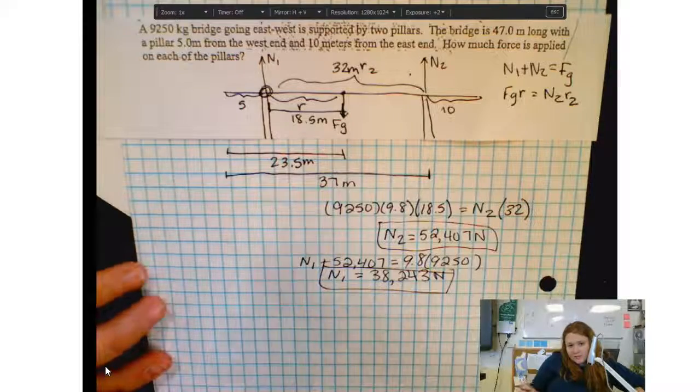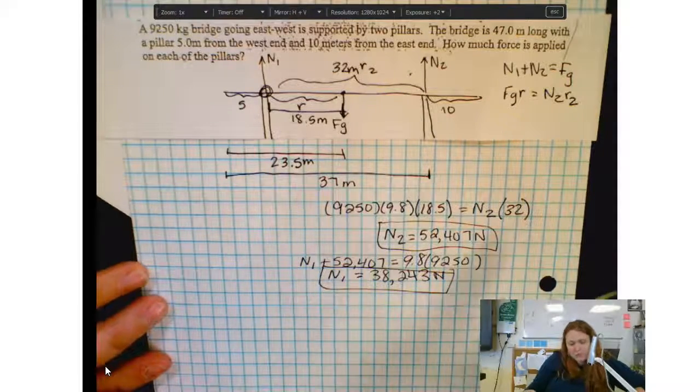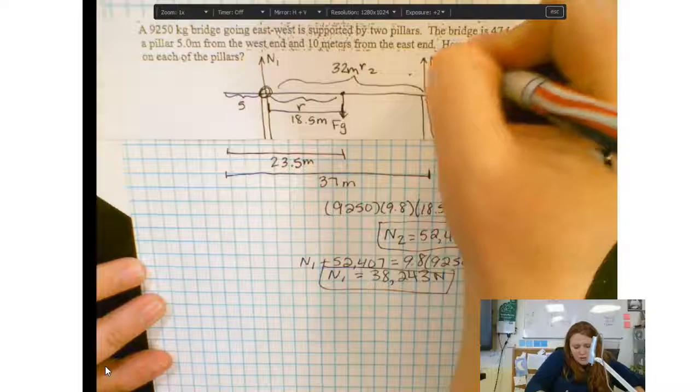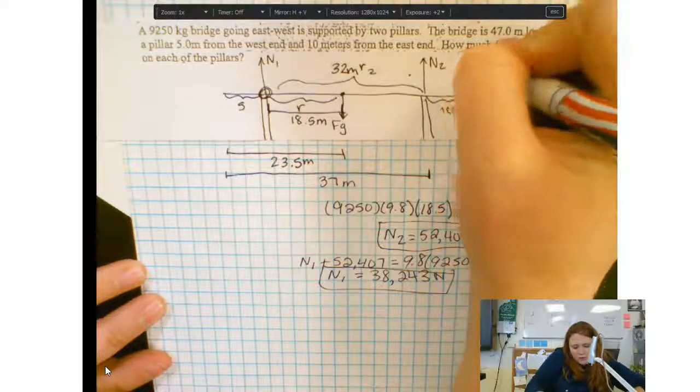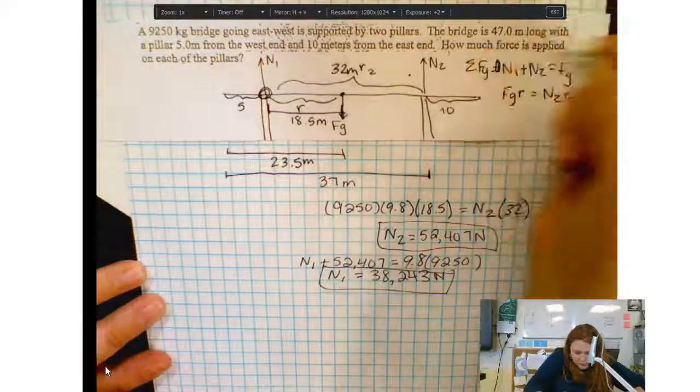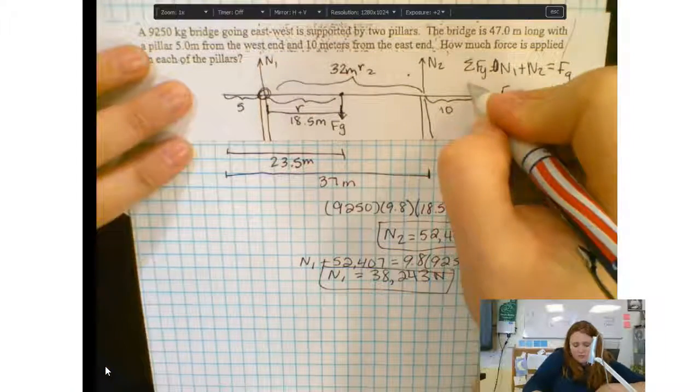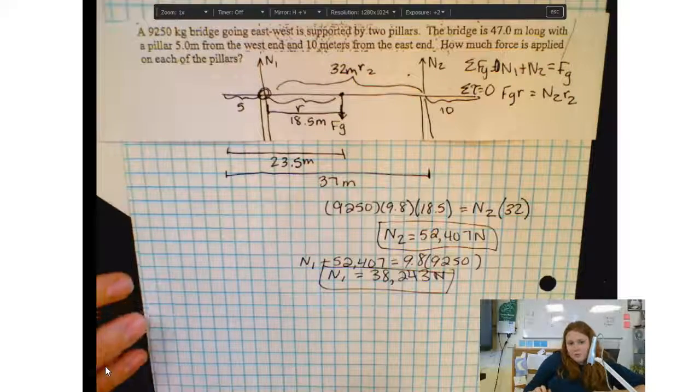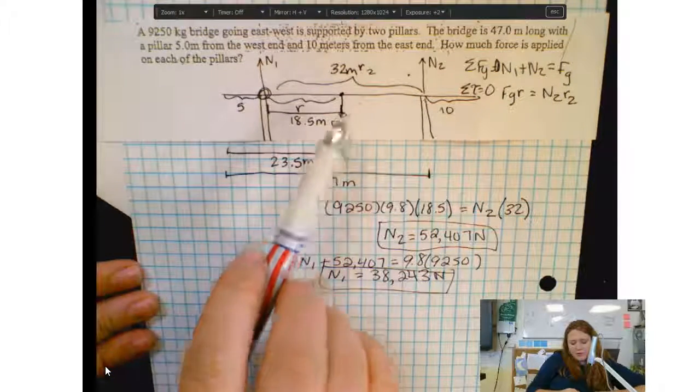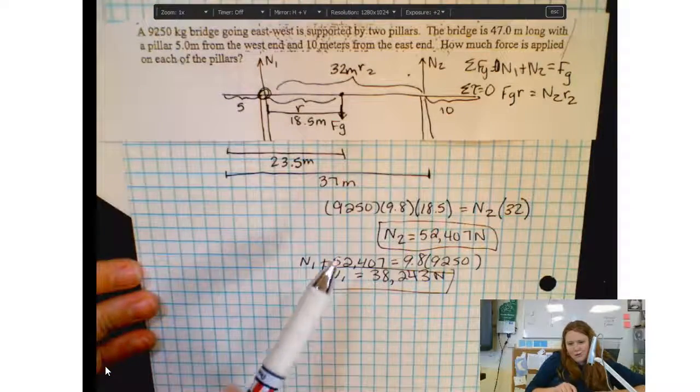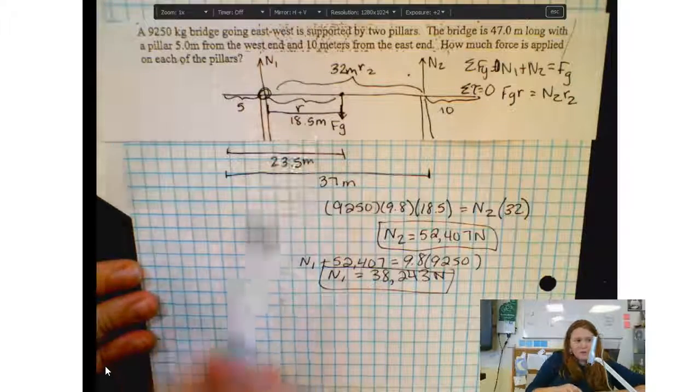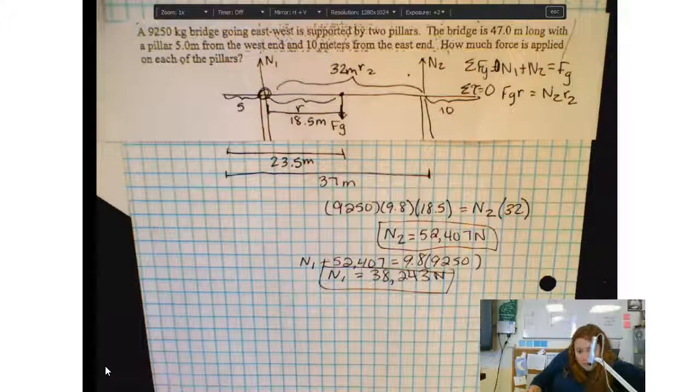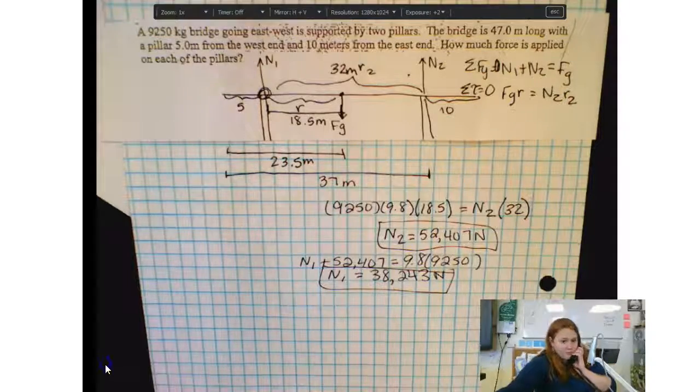Okay so a couple things about the bridge problem. You always want to use the fact that all of your forces in the y direction have to be equal to zero and you want to use the fact that all your torques have to sum to be zero. Remember this means that we're going to set our clockwise torques equal to our counterclockwise torques.